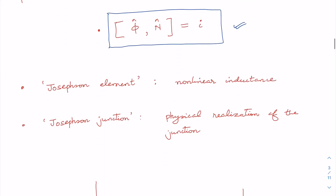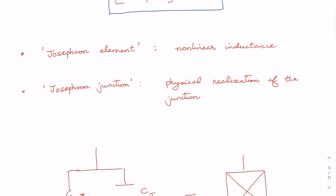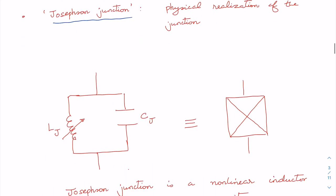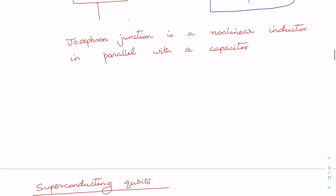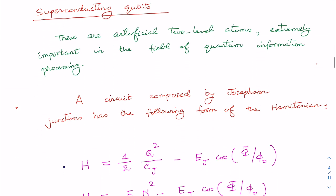The Josephson element generally refers to nonlinear inductance, while the Josephson junction refers to the physical realization. The Josephson junction is a nonlinear inductor in parallel with a capacitor, represented by a specific circuit symbol. Whenever you encounter that symbol, it refers to the Josephson junction.